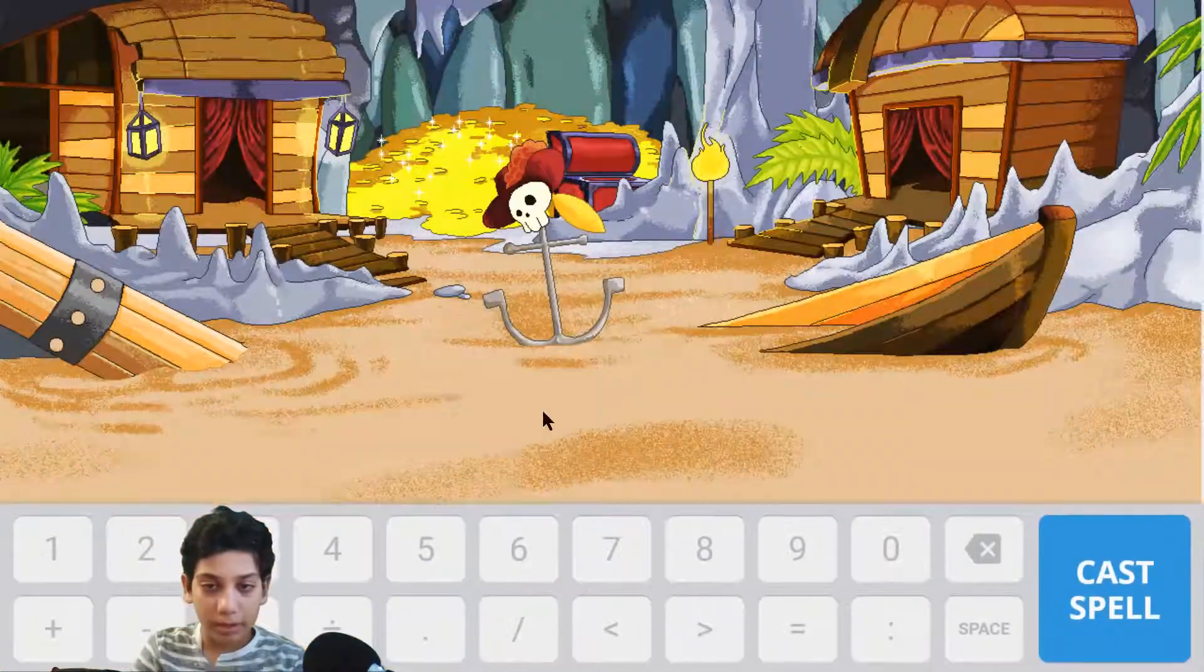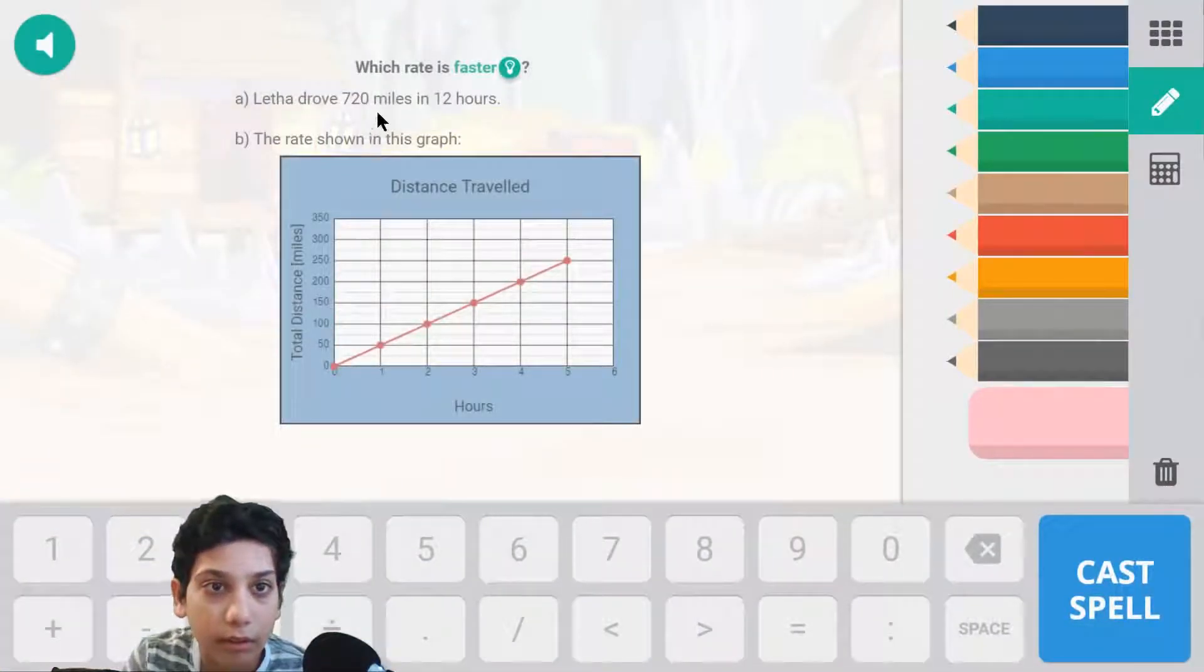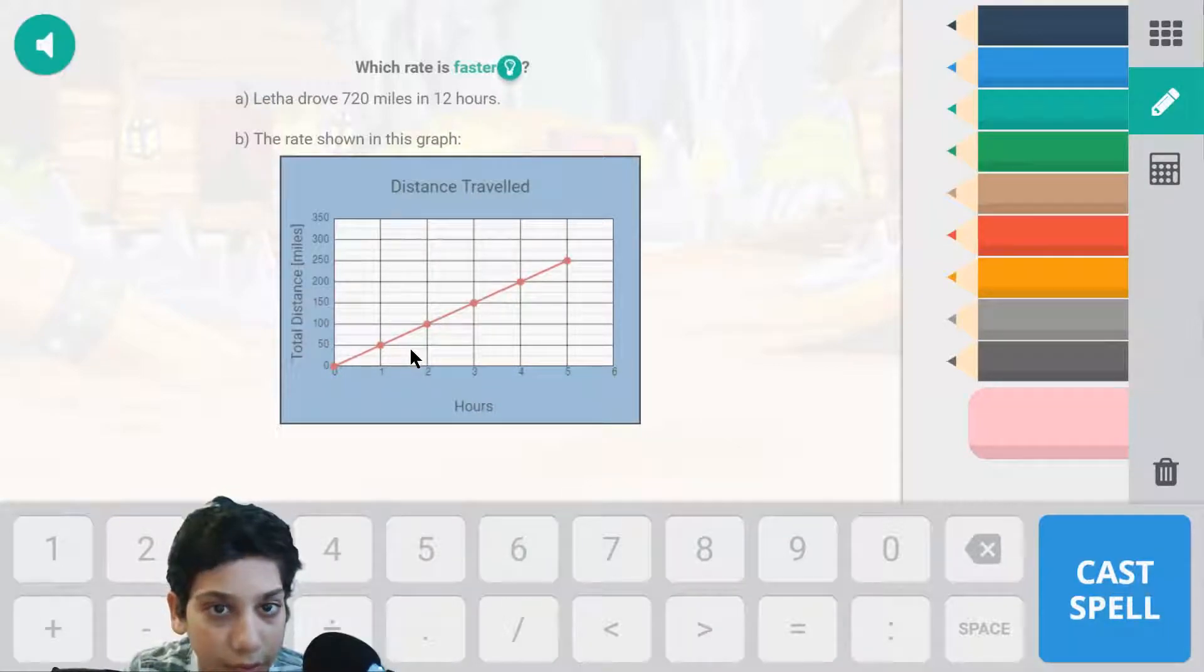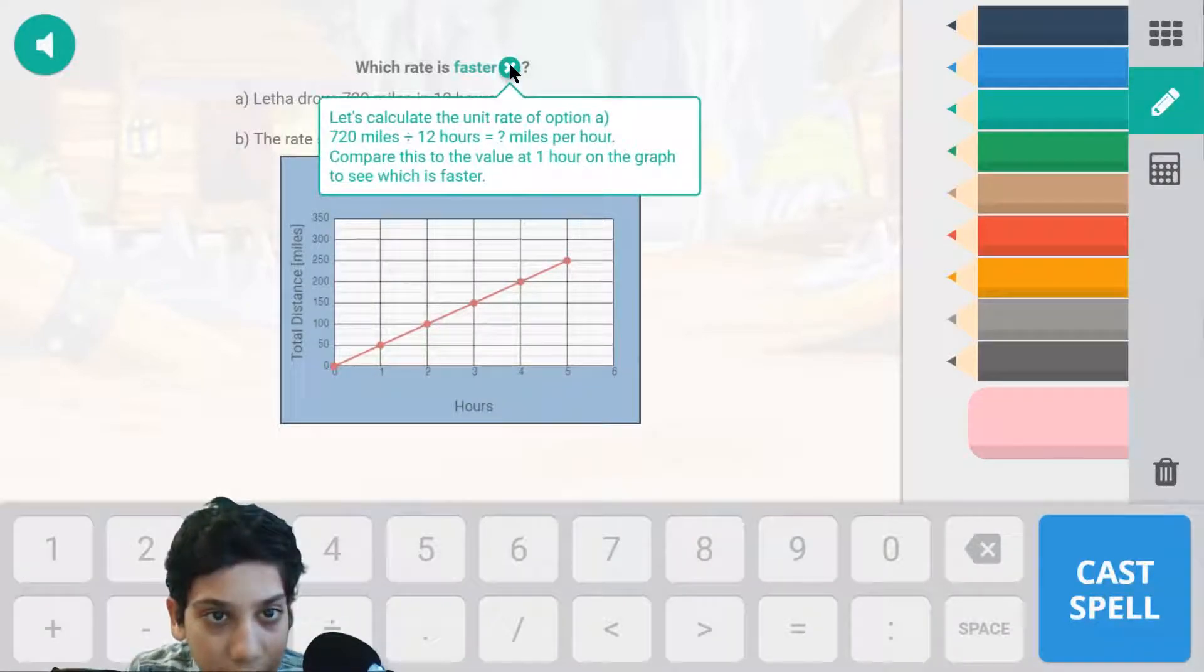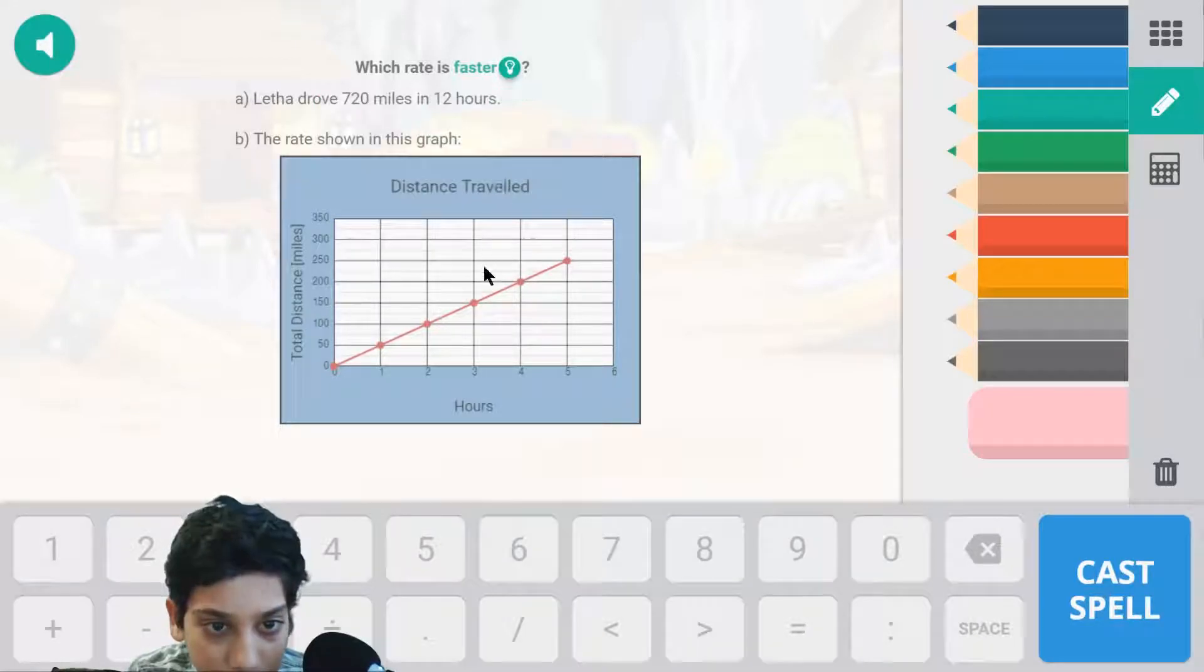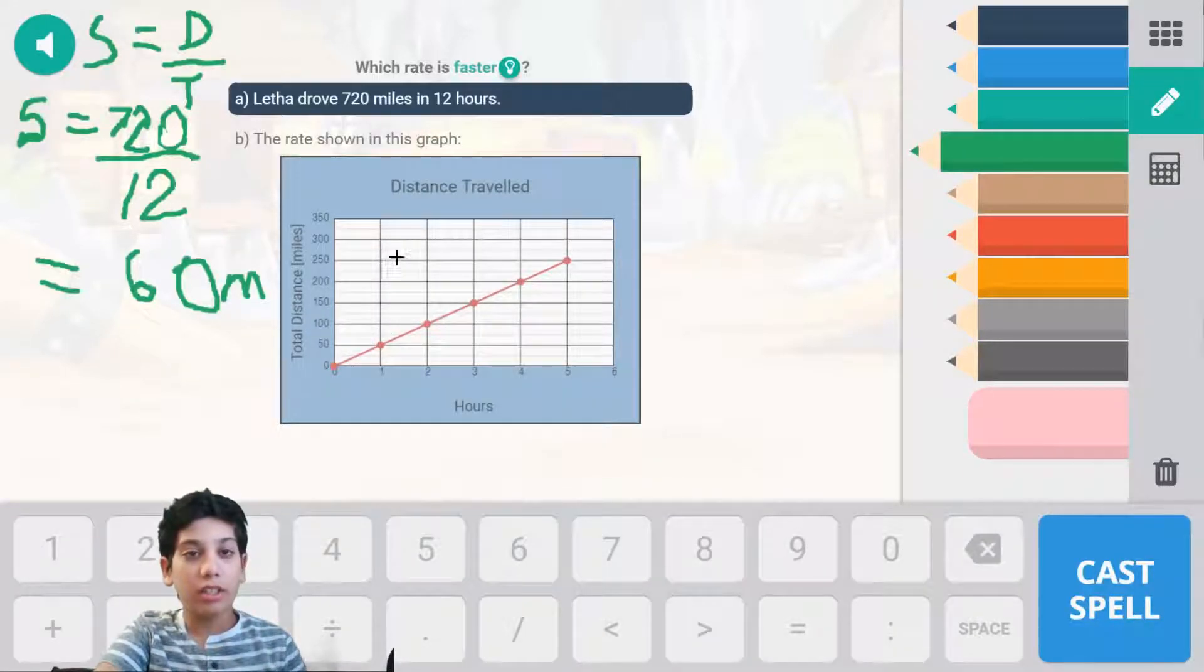And batter up! So what is, which rate is faster? A letter drove 720 miles in 12 hours, the rate shown on the graph. Which one's which rate is faster? Okay, I figured out the answer.